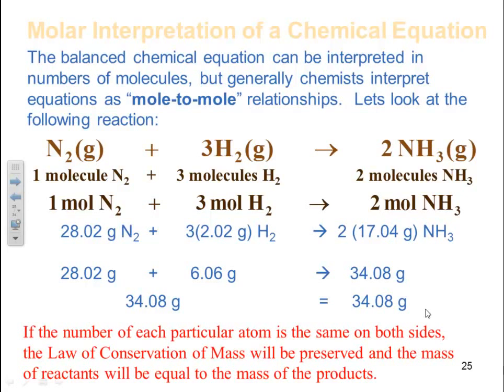If the number of each particular atom is the same on both sides in your balance equation, then the law of conservation of mass will be preserved, and the mass of your reactants will equal the mass of your products.